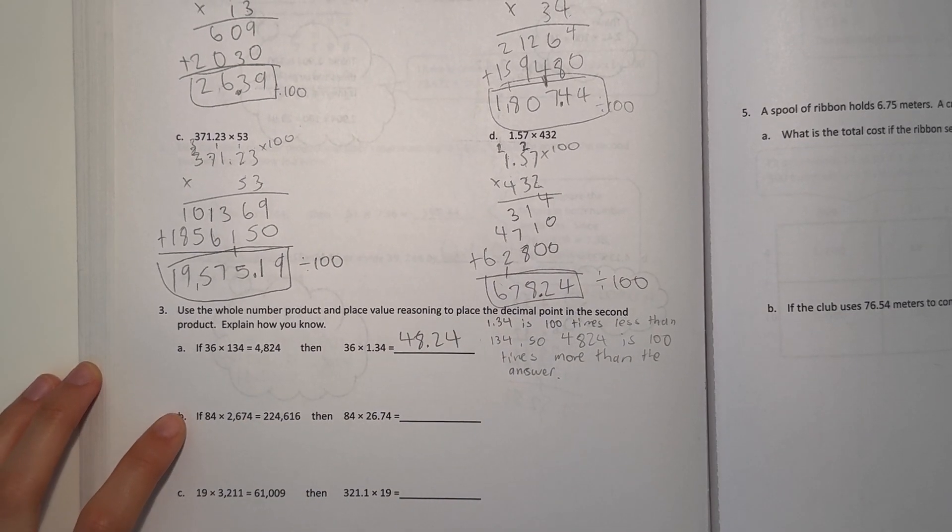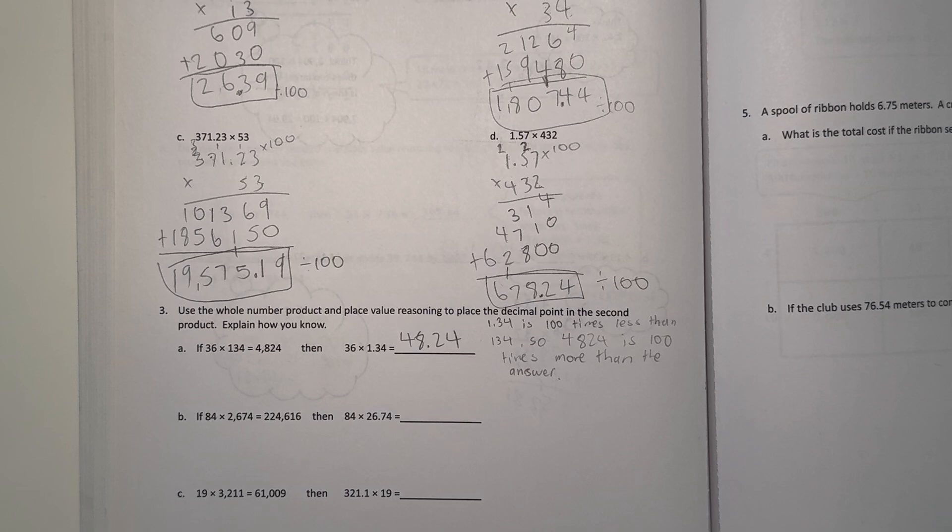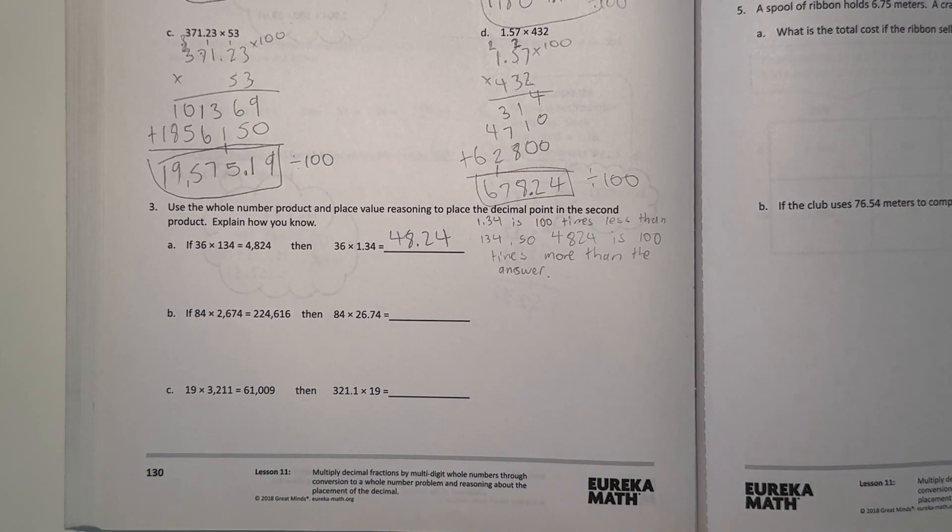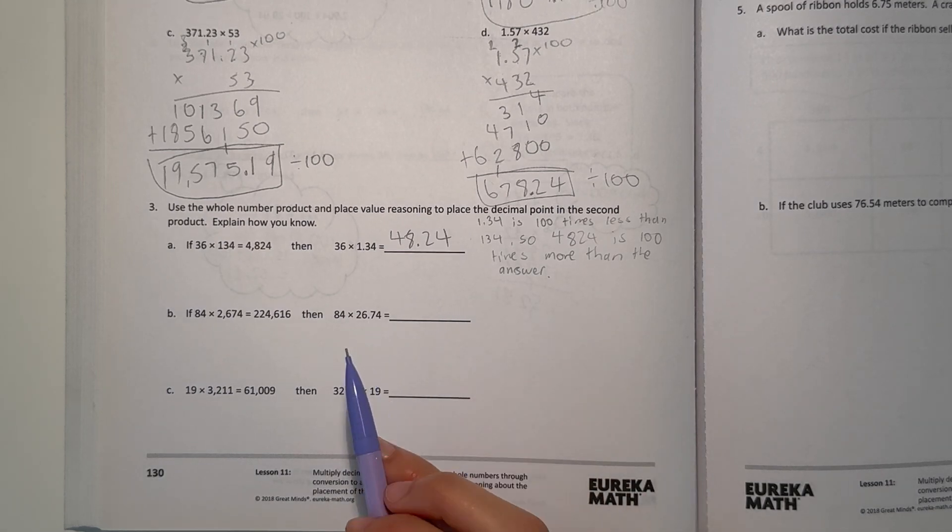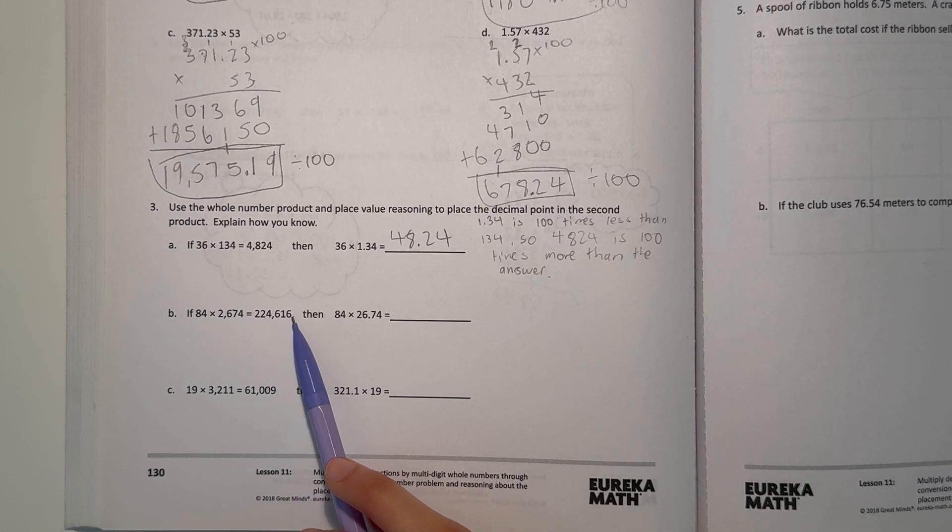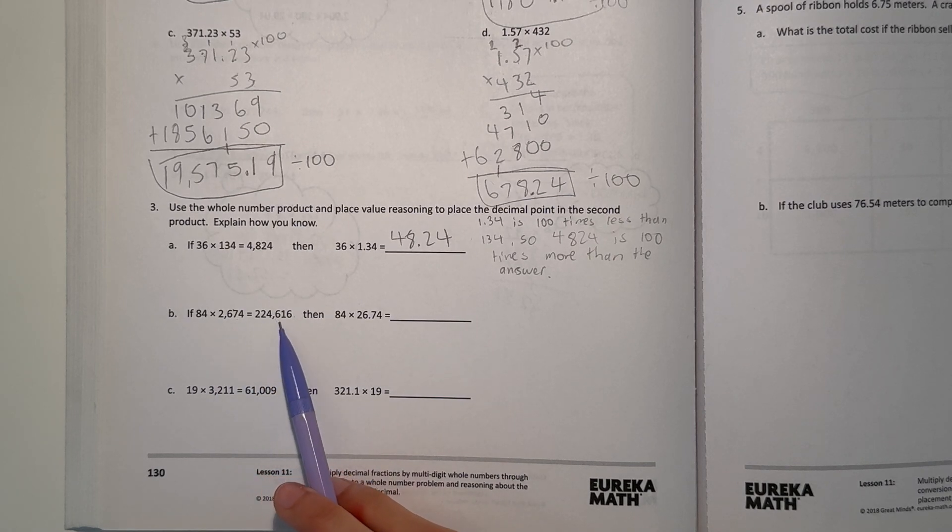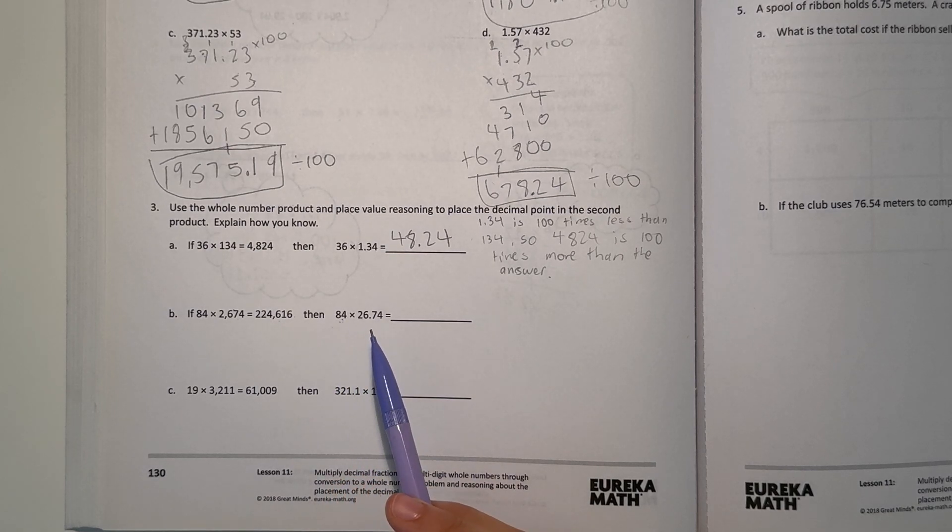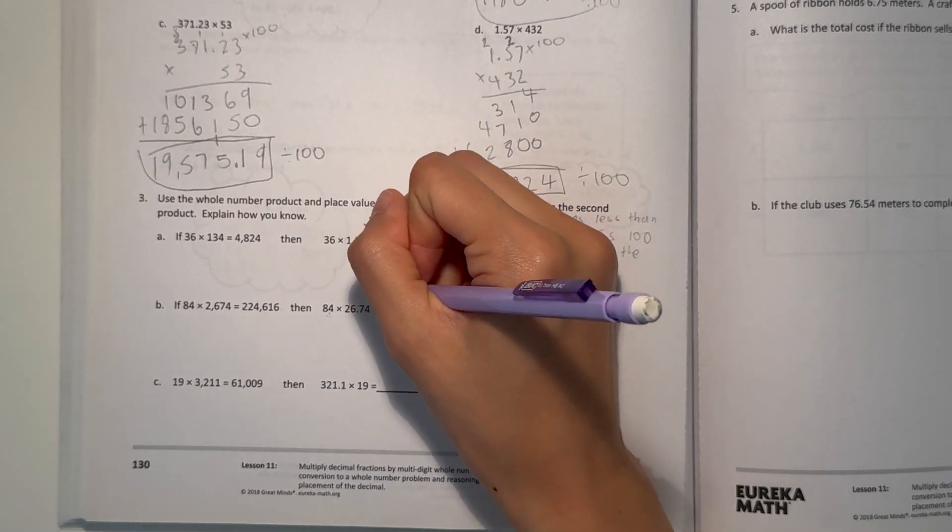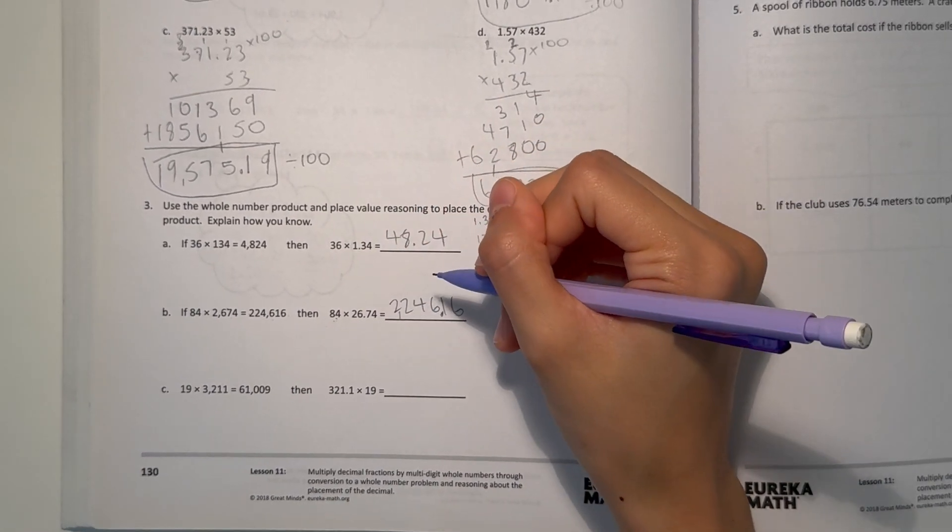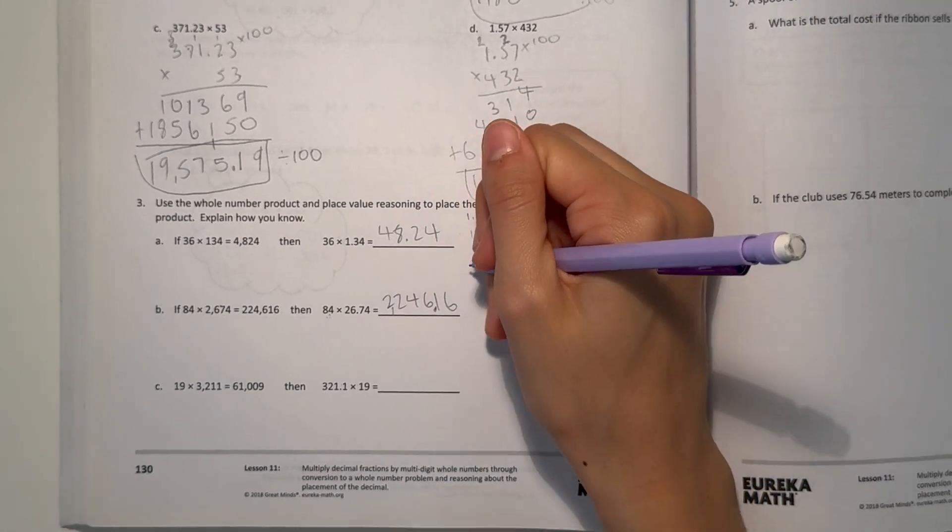And B, if 84 times 2,674 equals 224,616, then 84 times 26.74. This is times 100, and now there's 100. So whole times whole equals whole. Then we have 84 times 2,674, the answer would be in hundreds. So divide by 100 that number, so that decimal point would be here. So our real answer would be 2,246.16.